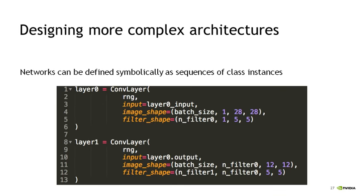To define a deep neural network architecture, you simply stack instances of these Python classes where the output of one instance becomes the input to the next. Here we see two convolutional layers. We pass in parameters specifying filter sizes and input data size. For layer 0 — the first layer — we pass in the layer 0 input. For layer 1, also a convolutional layer, the input is the output of the first convolutional layer. That's really how you define any more complex deep learning architecture in Theano.